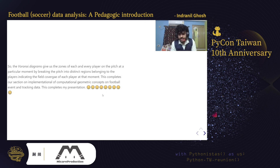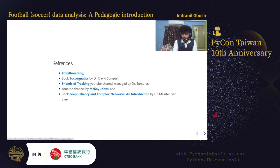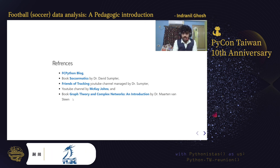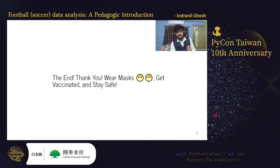This completes the presentation. Important references include: the SCPython blog; the book Soccer Mathematics by Dr. David Sumpter; the Friends of Tracking YouTube channel managed by Dr. Sumpter; the YouTube channel by Mccajohns; and the book Introduction to Complex Networks for the complex network analysis section. Wear your masks, get vaccinated, and stay safe.